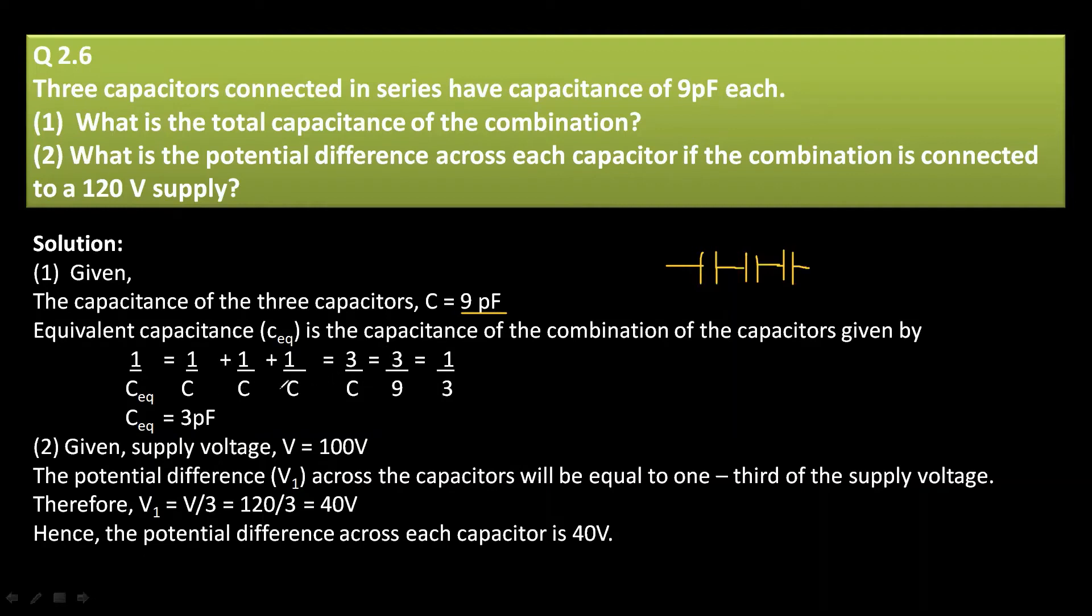Then on taking LCM of C, we will get 3 by C which is equal to 1 by C equivalent. So the equivalent capacitance of these three capacitors is 3 picofarad.